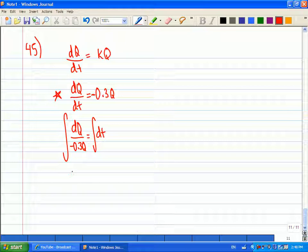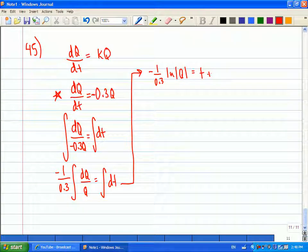Well, I can take that constant out front. So this will be negative 1 over 0.3. And that will be natural log of Q equals T plus some constant.